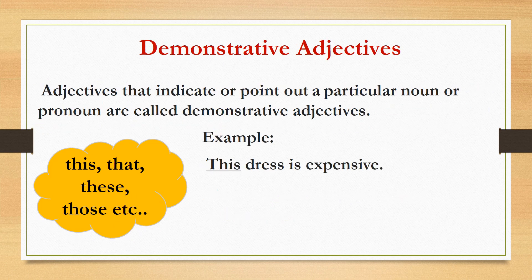Let's move on to our next kind of adjective: demonstrative adjectives. As the name suggests, demonstrative means to show, something that points out. Adjectives that indicate or point out a particular noun or pronoun are called demonstrative adjectives. The example is: This dress is expensive. I am pointing out at the dress. So here, this will be the demonstrative adjective. Few more examples of demonstrative adjectives are this, that, these, those, and so on.